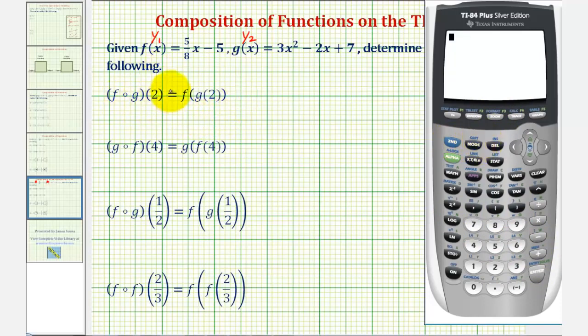Looking at our first composition of functions, notice how it's written two ways. These are the two most common ways to express a composition of functions. In both cases, we say f of g of two. But I think the second notation here is a little easier to work with because it's easier to see which function would be the inner function.